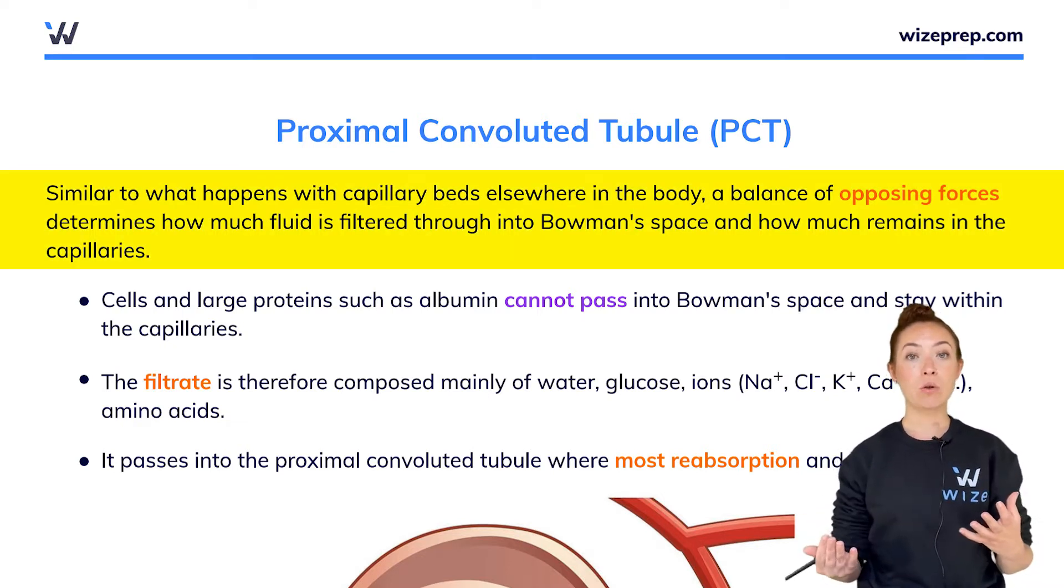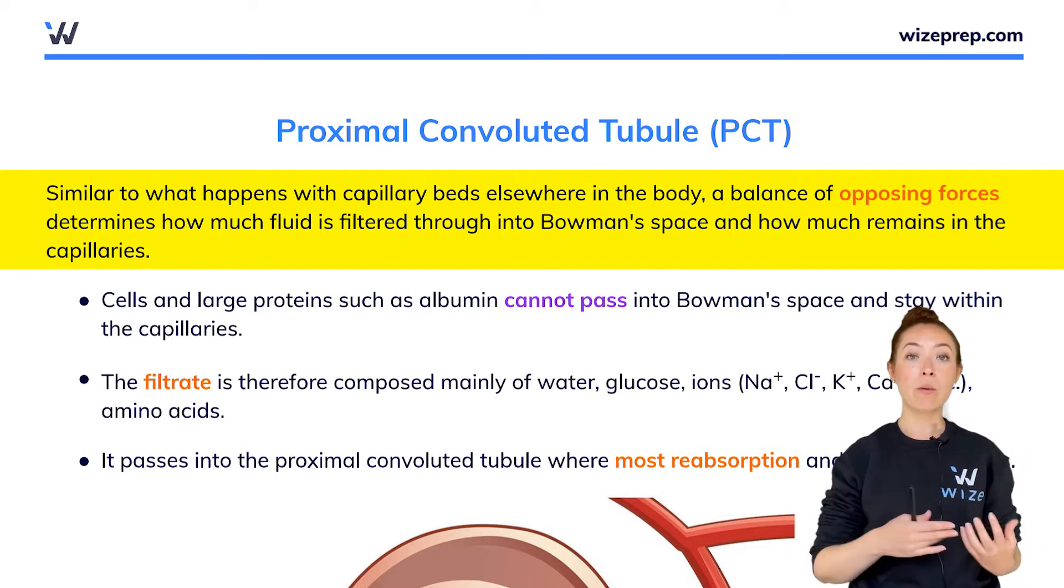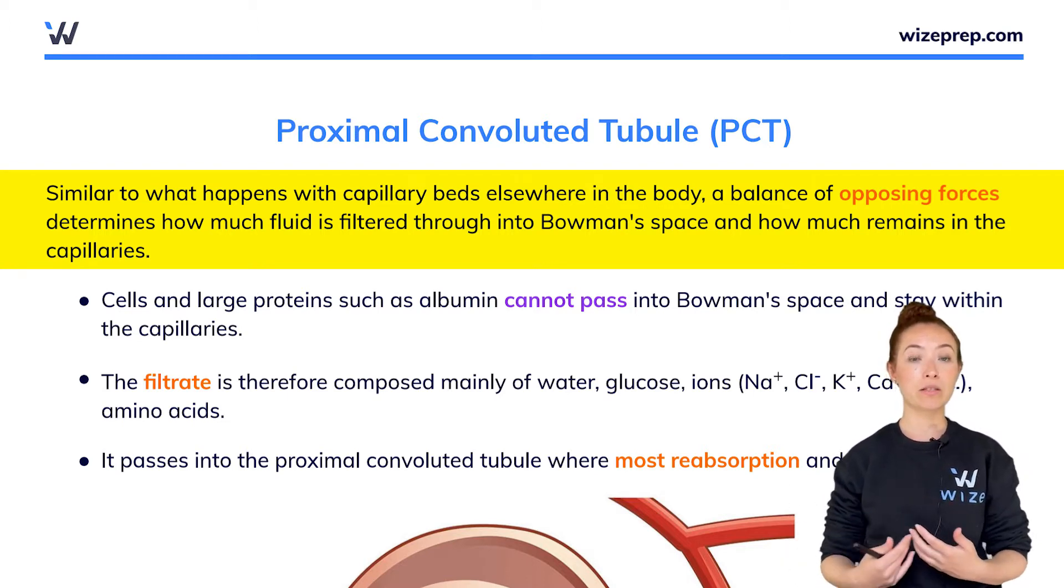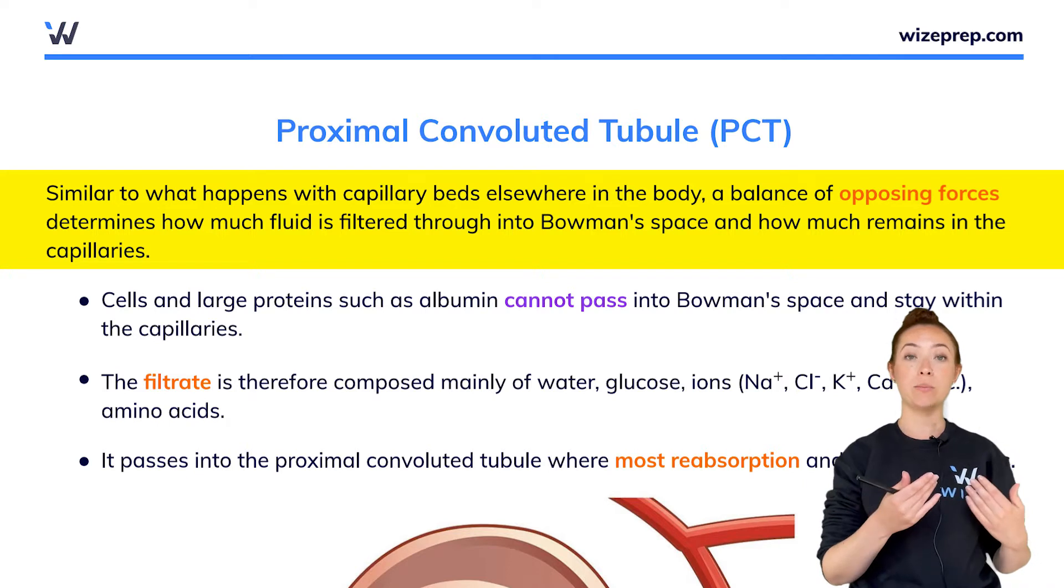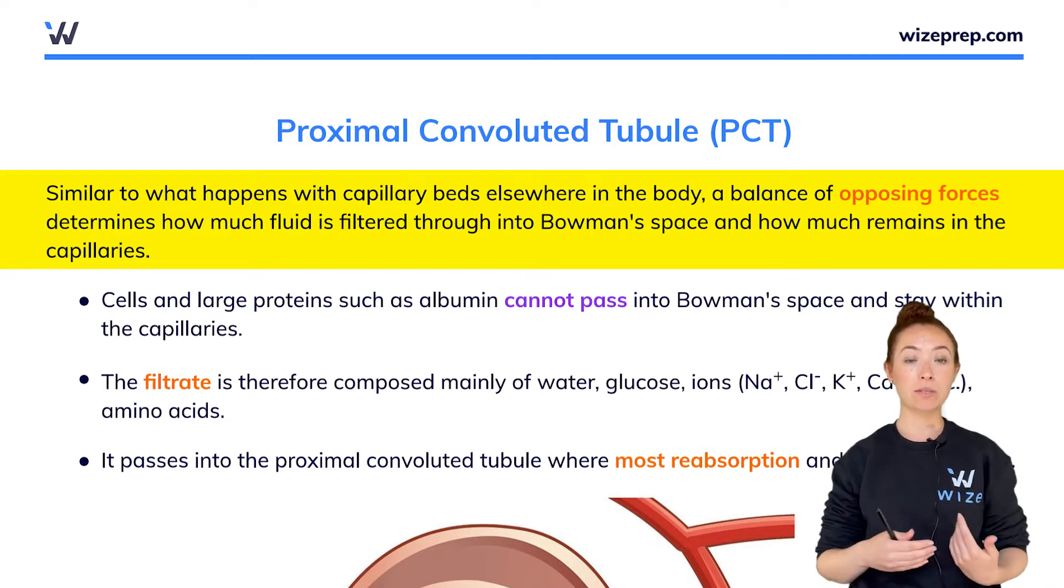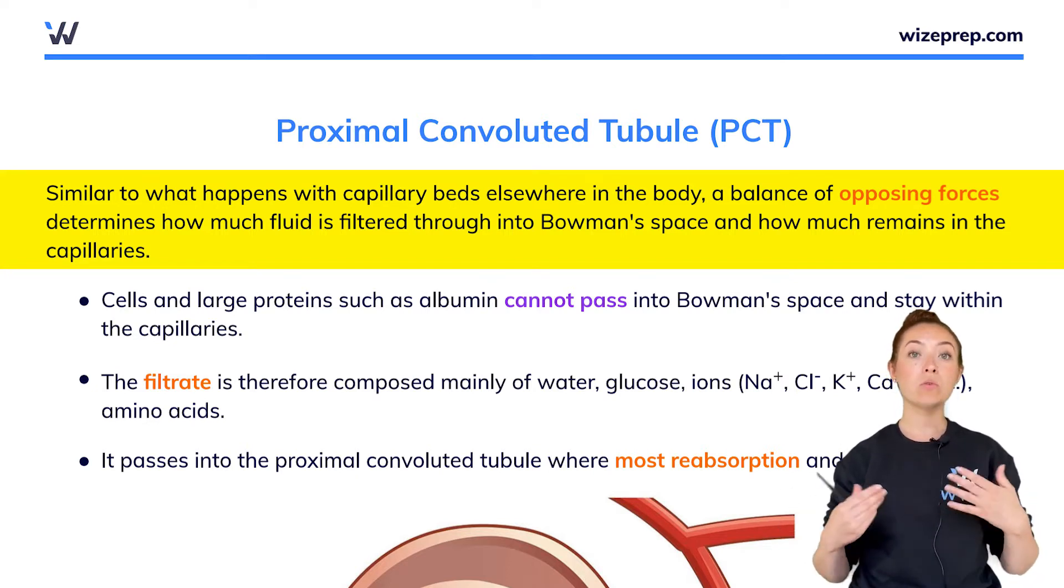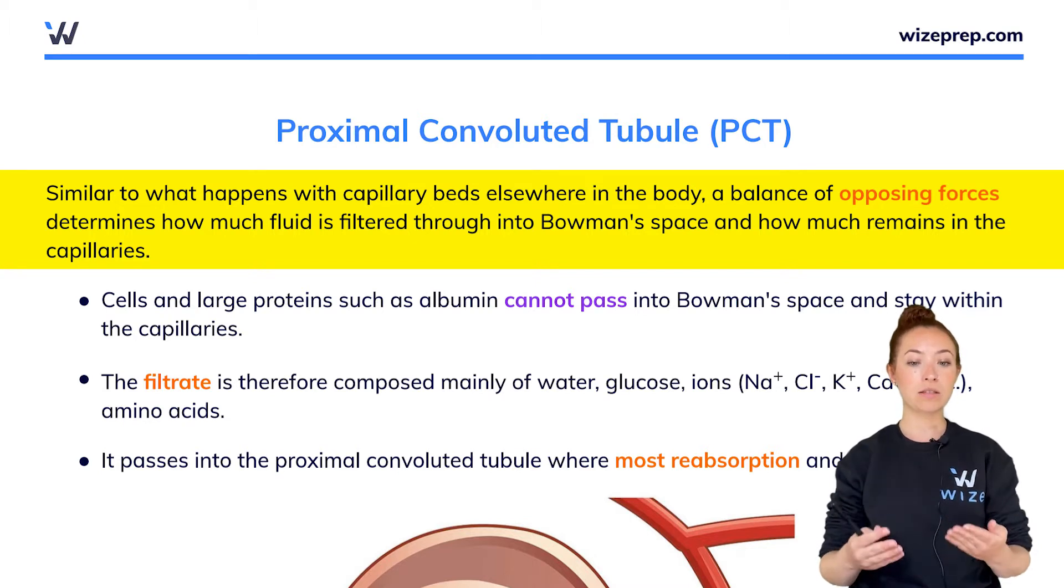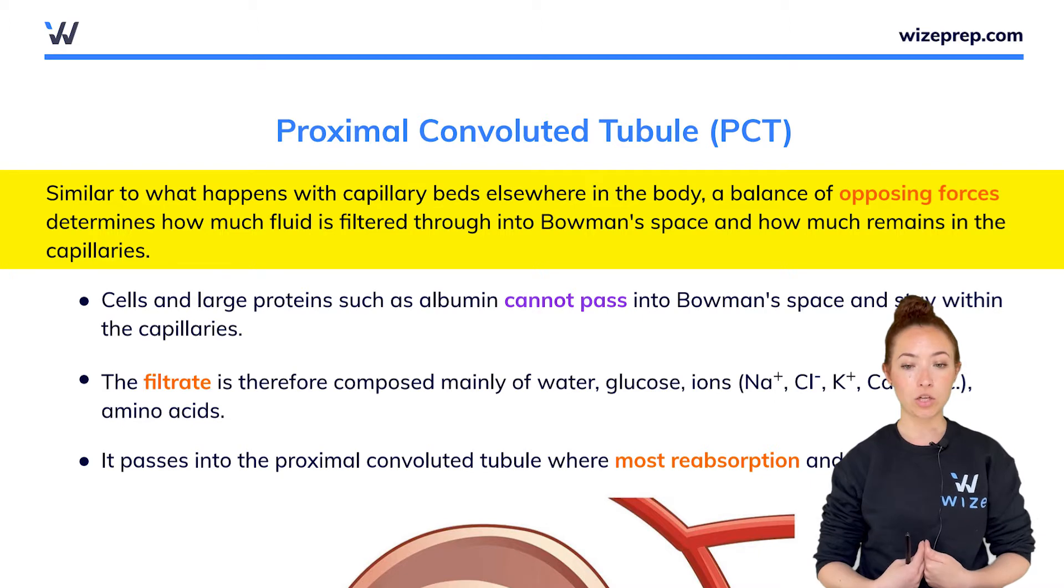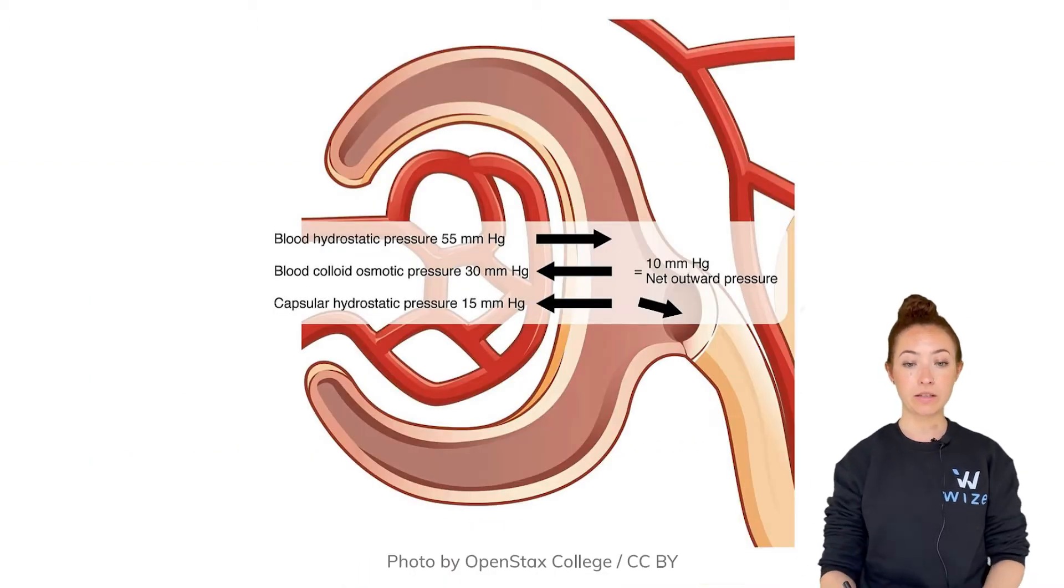What determines how much gets filtered from the glomerular capillaries or what actually ends up staying in the capillaries themselves and then goes out through the efferent arteriole is determined by a balance of forces. Just like in every other capillary in your body, there are four forces that are opposing one another that will determine how much actually goes into the interstitium. In this case it's into the Bowman's space versus how much actually stays in circulation. This is what we see here in this drawing.